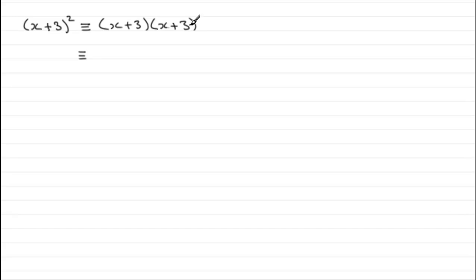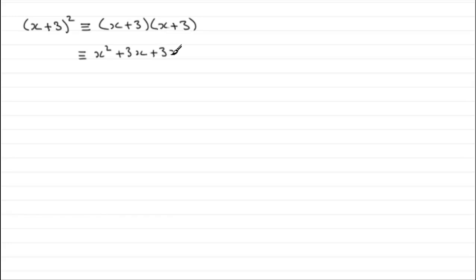The usual way: we do x times x which is x squared, and x times 3 which is plus 3x, plus 3 times x which is another 3x, and then 3 times 3 is going to be plus 9.